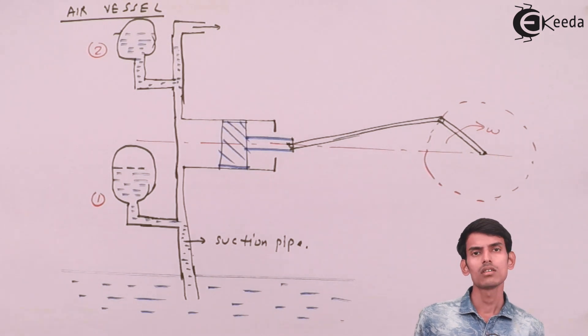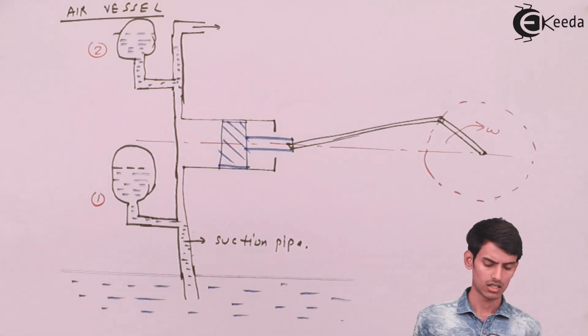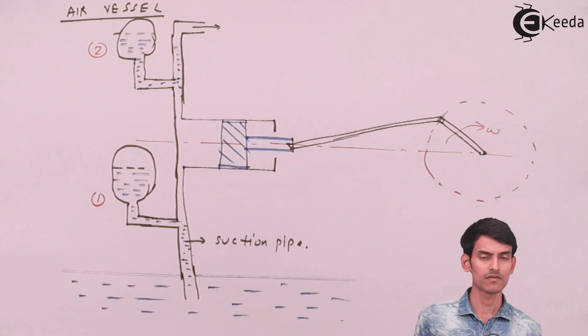Also the pump can be driven by a crank which is connected to a motor, so this pressure fluctuation is absorbed by the air vessel. So that was all about this topic, air vessel.